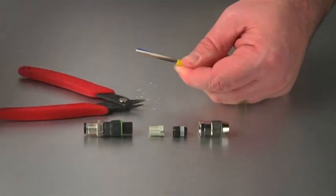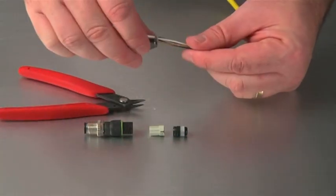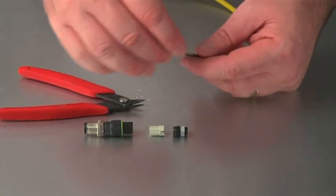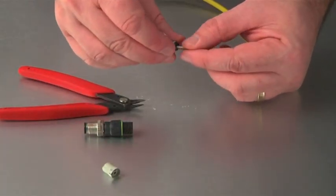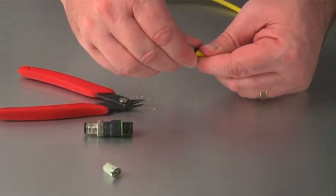Slide the cable strain relief over the conductors and to the end of the cable jacket. You will notice that the strain relief is made to slide over just the very end of the outer cable jacket.